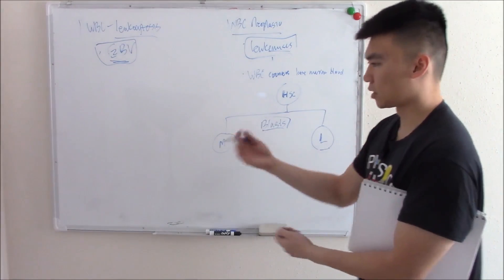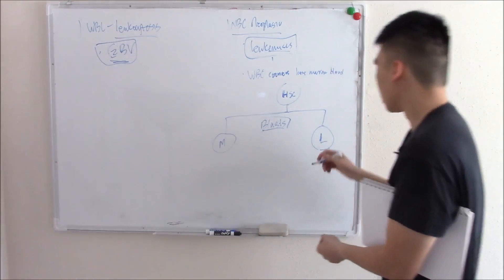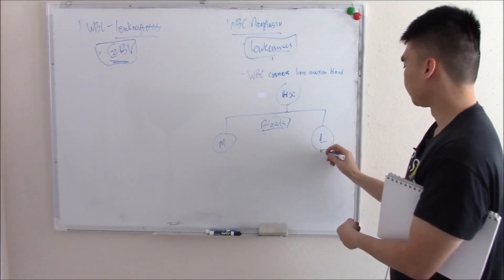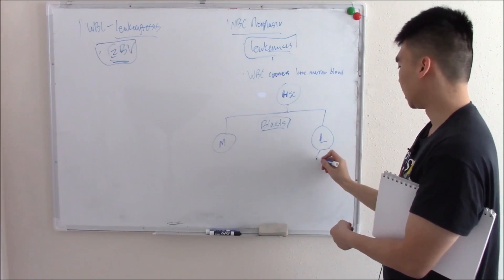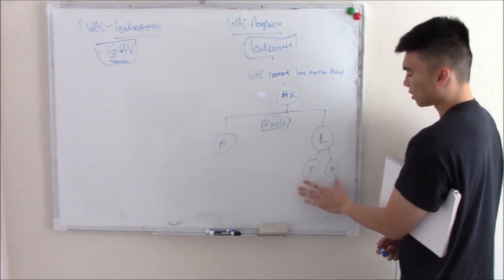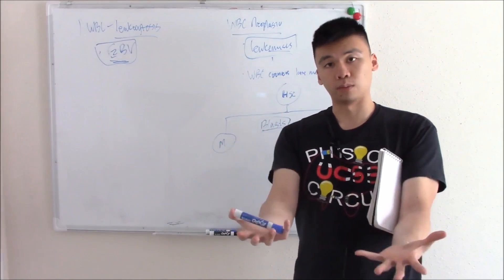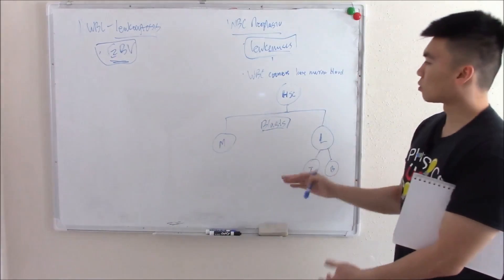Your myeloblast will eventually become red blood cells, macrophages, neutrophils. Your lymphoblast will become T lymphoblasts and T cells, and B lymphoblasts and B cells. By taking your T and B cells and things like macrophages and neutrophils, you make your white blood cells.